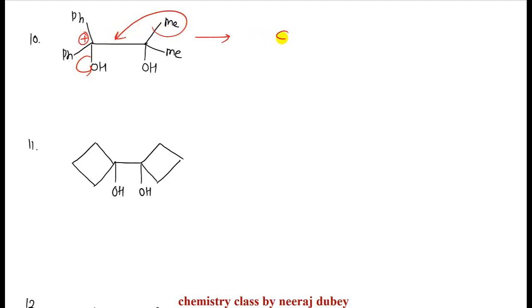Both methyl groups are present, either will migrate. So the carbon has two Ph groups, one Me, and this forms C(=O) with Me — methyl has migrated to give the final product.